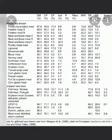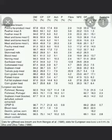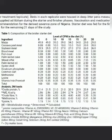Guinea fowl: 0 to 8 weeks requires 3,000 kilocalories of energy per kg of feed, at least 15% protein.